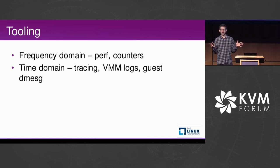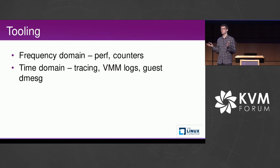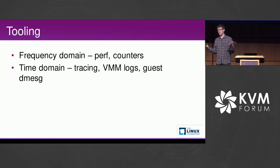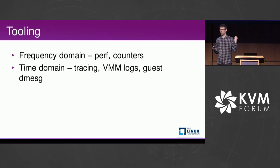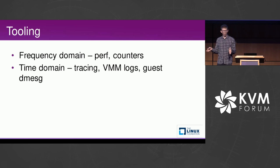There are several different ways to analyze that number and how we can go about improving it. You can split this into two ideas. We can look at things from the frequency domain — how often does something occur — using a tool like PERF, looking at stochastic counters and call graphs, or explicit counters for VM exits. In Cloud Hypervisor we have a counter for VM exits, and you can also tell PERF to look at specific types of KVM exits. Or you can look at things from the time domain using tracing. I built some custom tracing infrastructure to generate this output.